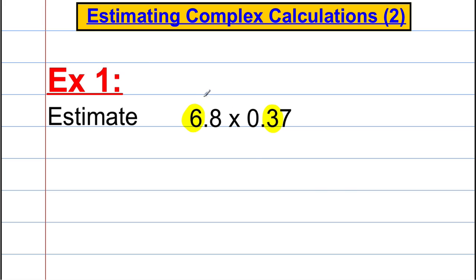So we're going to round this number to the nearest 1, which is clearly 7, and we're going to round this number to the nearest tenth, which is clearly 0.4. And we want to work out 7 multiplied by 0.4 and the answer to that is clearly 2.8.